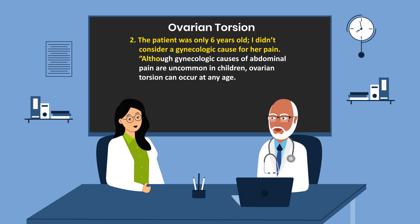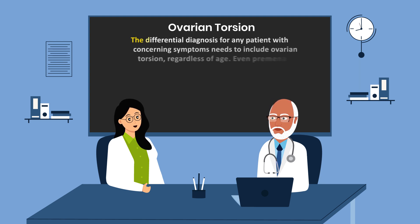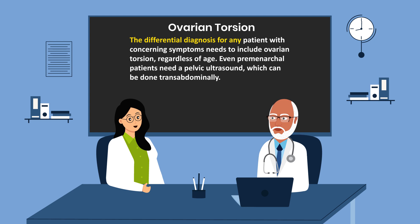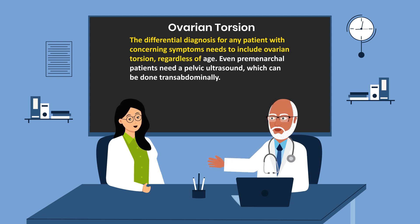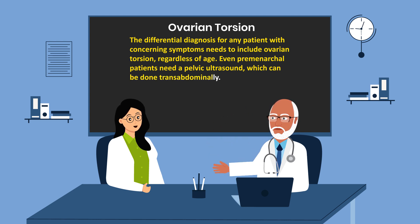Although gynecologic causes of abdominal pain are uncommon in children, ovarian torsion can occur at any age. The differential diagnosis for any patient with concerning symptoms needs to include ovarian torsion regardless of age. Even premenarchal patients need a pelvic sonogram, which can be done transabdominally.